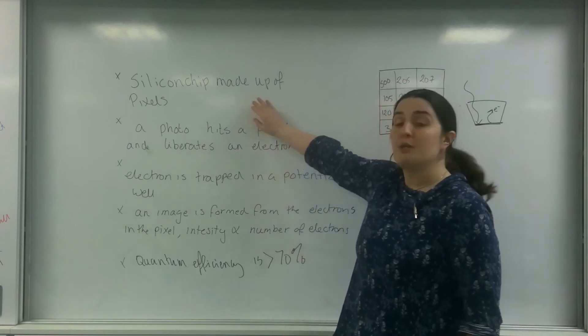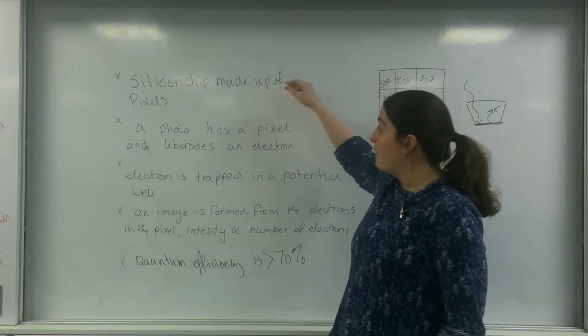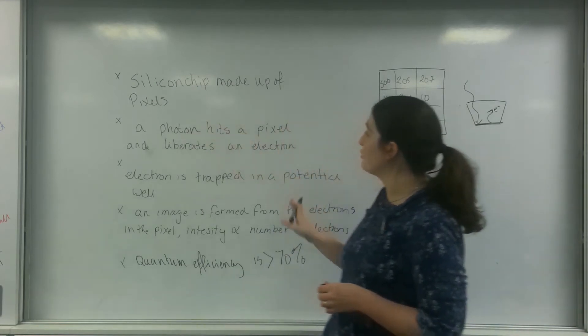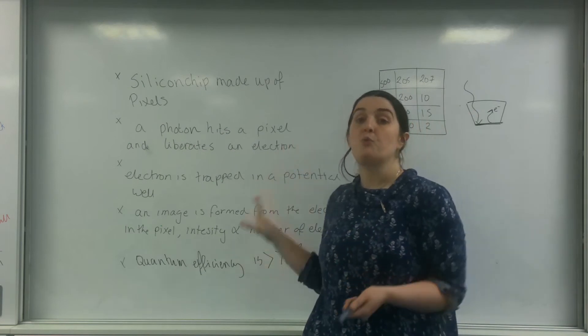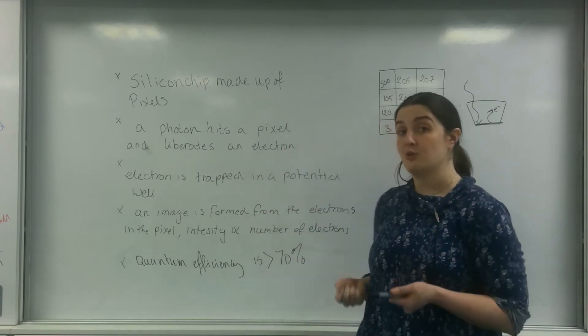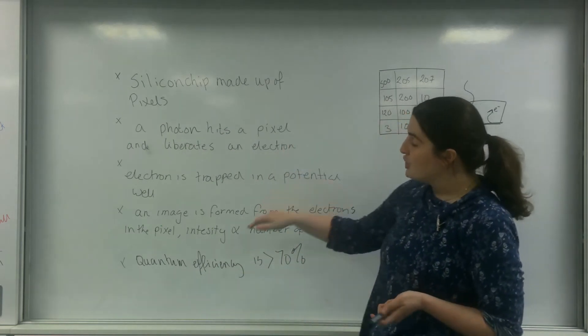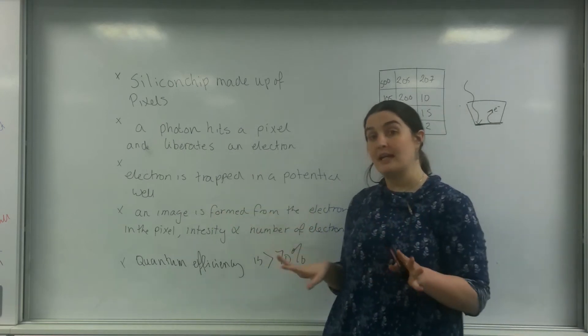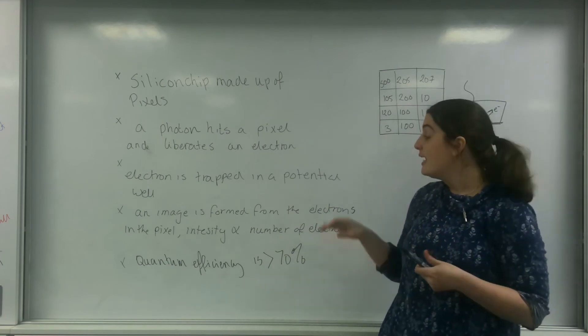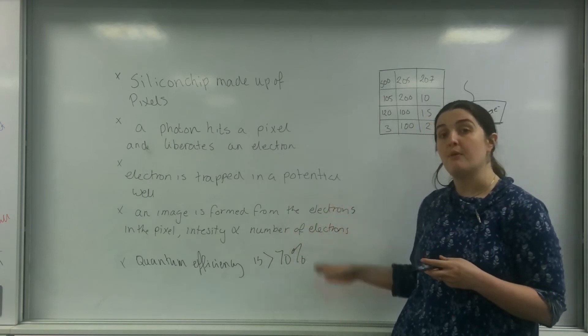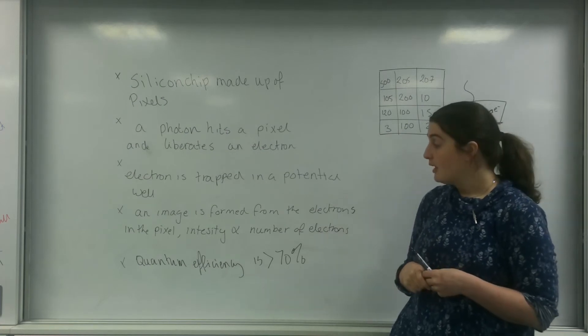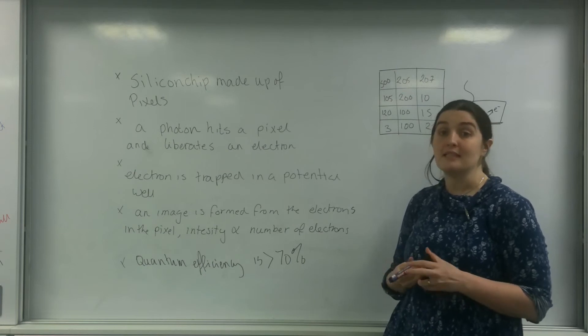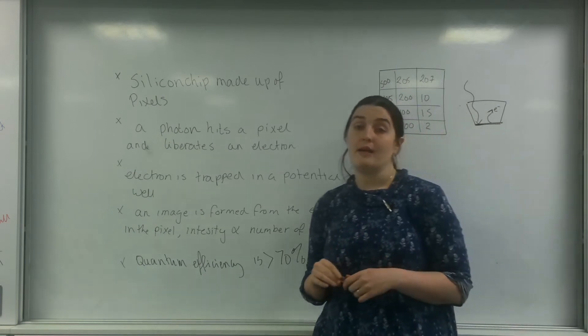But you need to understand that a silicon chip is made out of pixels, that when a photon hits a pixel and liberates an electron, the electrons are then trapped in a potential well, and that's something you really need to make sure you write. And then mentioning that an image is formed from the electrons in the pixel, and that the intensity of the object at that point we're looking at is directly proportional to the number of electrons that are in that actual pixel. And you need to know that the quantum efficiency of a CCD is greater than 70%.